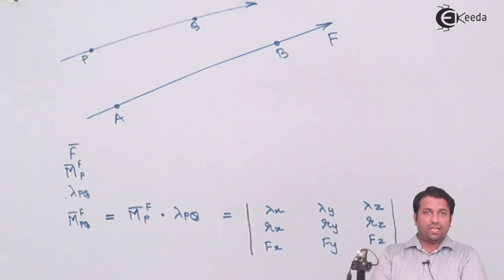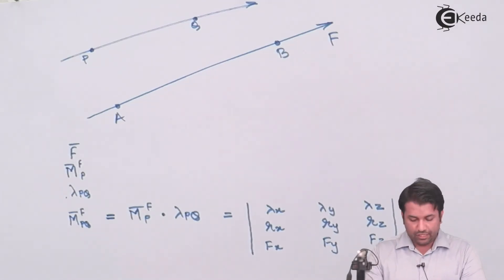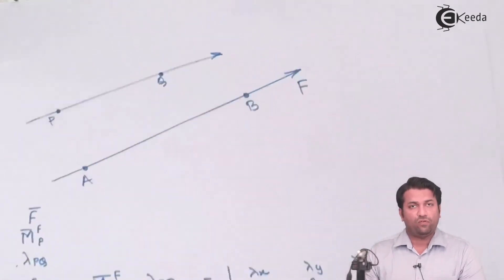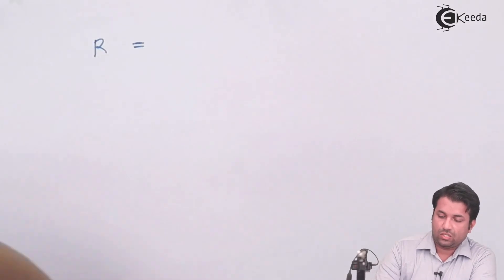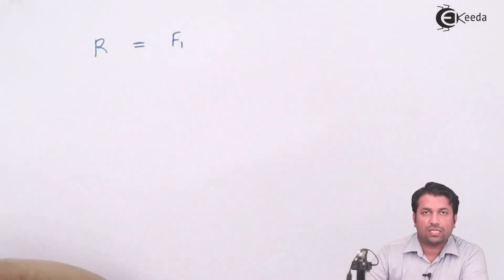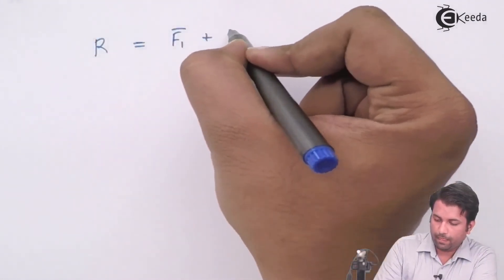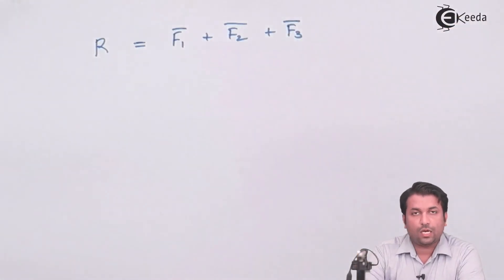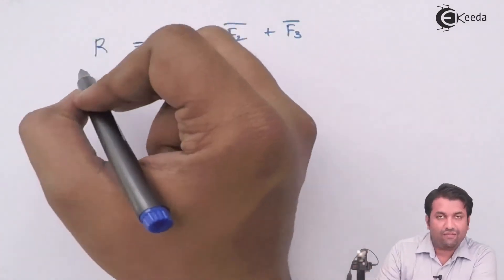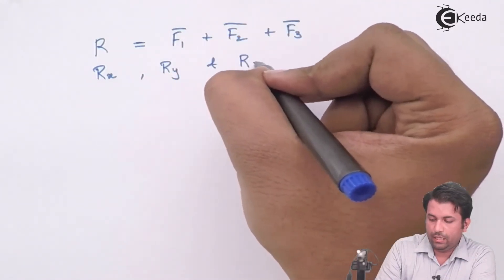Now this is the basic that we have been doing. If I want to find out the resultant of a force, it is the same as what we were doing in two-dimensional structures. If I have n number of forces acting, all I need to do is find out the resultant — it will be the summation of all the force vectors. If I am having three forces acting, I will first find out each force vector and take the algebraic sum of that. This is how I can find out the resultant. This resultant will have three components: Rx, Ry, and Rz.